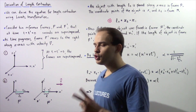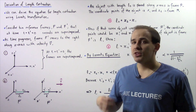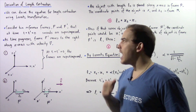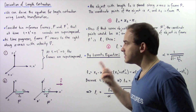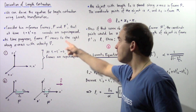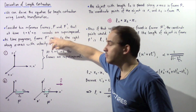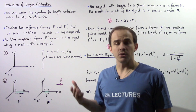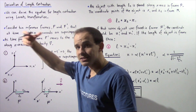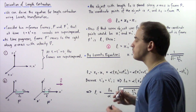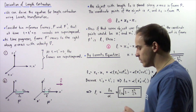Let's begin by supposing we have two inertial reference frames: one given by f and the second one given by f'. The time in frame f is given by t, and the time in frame f' is given by t'. Frame f consists of the x, y, and z axes, while frame f' consists of the x', y', and z' axes. At a time of t equals t' equals 0 seconds, our two frames are superimposed, so x and x' coincide, y and y' coincide, and z and z' coincide.